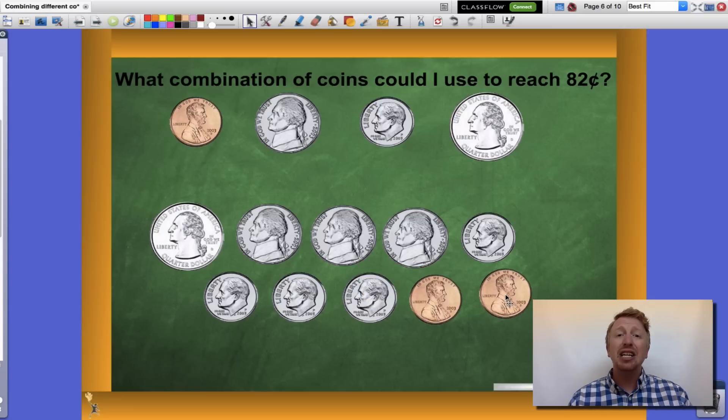I can get to 82 cents in a ton of different ways. The options are endless. Remember, use your groupings and your skip counting to help you.